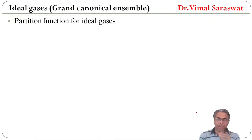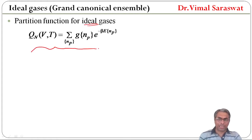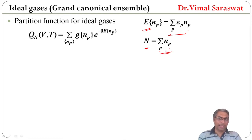The partition function for ideal gases, QN which is a function of volume and temperature, is equal to sigma over {np} of g(np) times exponential minus beta times E(np). Here E(np) is equal to sigma over p of ep times np, and N equals sigma over p of np — giving us total energy and total number of particles of the system.